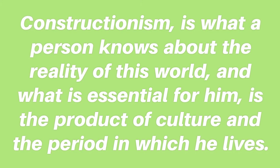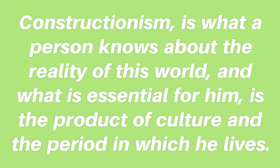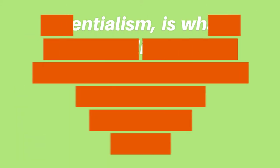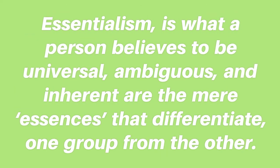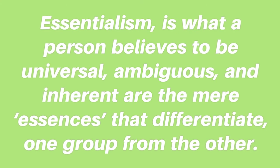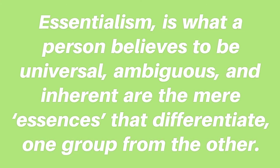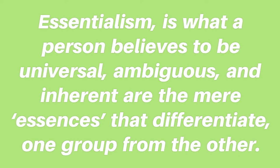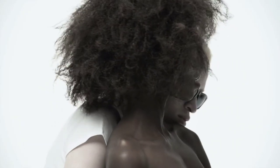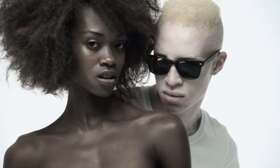This identity is finalized through the perspective of people around him, depending upon the theory of essentialism and constructionism. Orr suggests that constructionism is what a person knows about the reality of the world, and what is essential for him is the product of culture and the period in which he lives. He further suggests that essentialism refers to what a person believes to be universal, ambiguous, and inherent — the essences that differentiate one group from another.